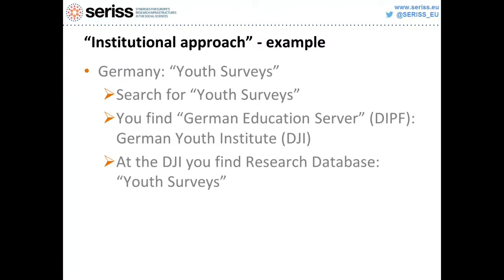For example, say you're interested in young people in Germany and looking for youth surveys. You will find the German Education Server run by DIV, one of our partner institutions, which gives you a link to the German Youth Institute. That institution does research very much on the topic you're looking for. The DJI has a research database, most prominently for surveys conducted for the Federal Ministry for Family and Youth Affairs. That would be a good starting point to step down towards the data.